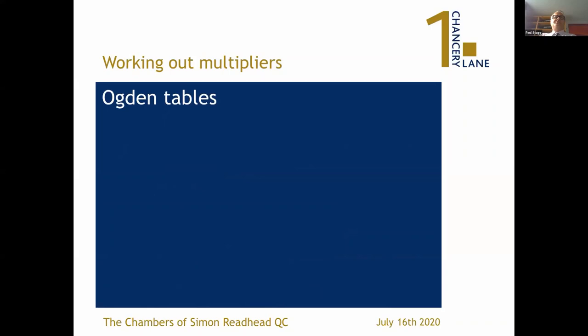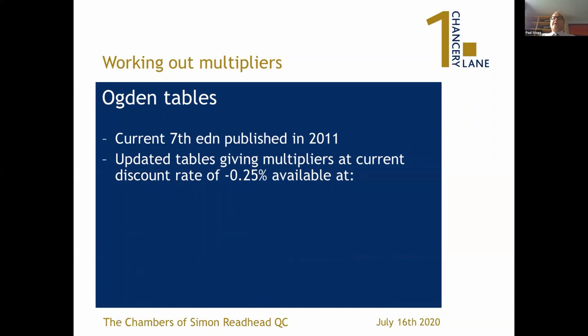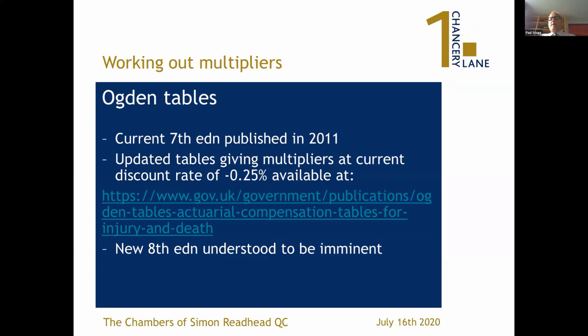Working out multipliers. We're using the seventh edition of the Ogden tables with the updated tables, which give the multipliers at the current discount rate of minus 2.5%. They are available online. We understand the new eighth edition of the tables is imminent, although it seems to have been imminent for quite a while - the government are treating personal injury as the lowest priority. We will be aiming to provide some kind of early webinar or other training when the tables do come out.